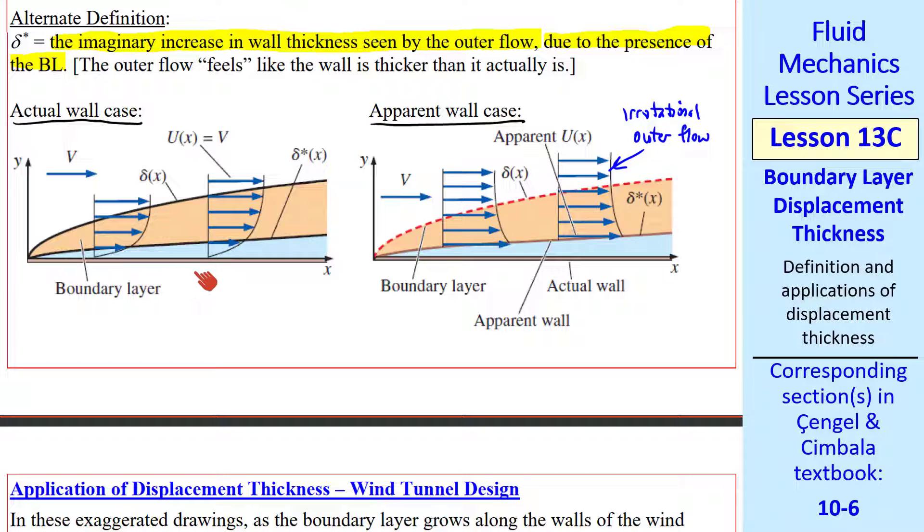If I pretend I have a thicker wall, my irrotational outer flow outside the boundary layer is no longer uniform like it is out here because of this thicker wall. So this is the actual case with a boundary layer. I put this same boundary layer in dashed lines because we're dealing now with a case without a boundary layer, just an irrotational outer flow with this apparent wall. The outer flow has to increase speed somewhat since this wall is growing in thickness.